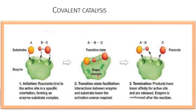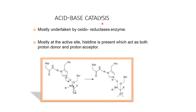In covalent catalysis, the enzyme forms a covalent linkage with the substrate, forming a transition enzyme-substrate complex with very low activation energy. The enzyme is released unaltered after completion of the reaction. In the initiation stage, the reactant binds to the active site of a specific enzyme in a specific orientation, forming an enzyme-substrate complex. In the transition state, interaction between the enzyme and the substrate lowers the activation energy required. At the termination stage, the product has lower affinity for the active site and is released, while the enzyme remains unchanged.